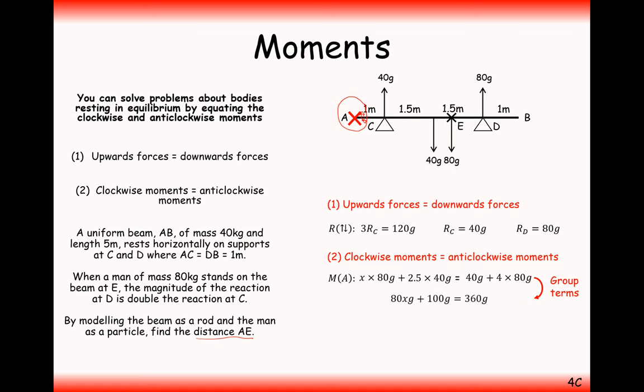Simplifying the algebra, grouping like terms and cancelling Gs: subtracting 100, dividing by 80, we get X equals 3.25 metres. This makes sense — the centre is at 2.5 metres, so 75 centimetres beyond that is where the man is standing.